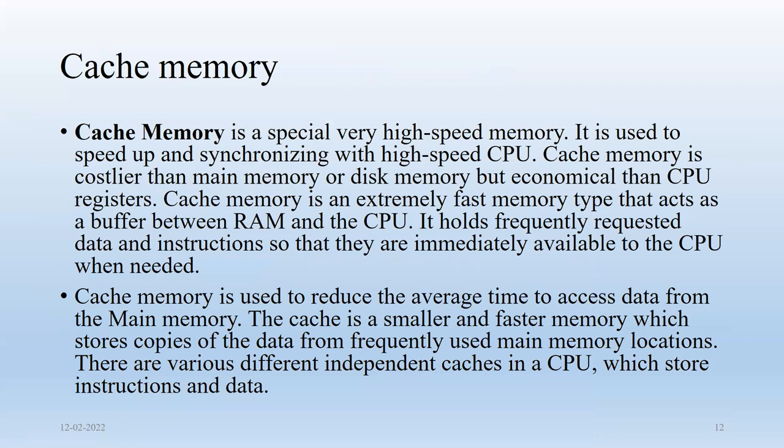Cache memory is called super high-speed memory. It is used to speed up and synchronize with the high-speed CPU. Cache memory is costly compared to main memory or disk memory, but more economical than CPU registers. We have four kinds of memory: CPU registers, which are internal components of the microprocessor. If they are part of the CPU, the distance is less and the speed is high.